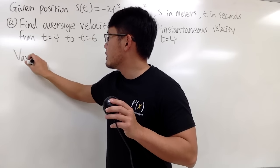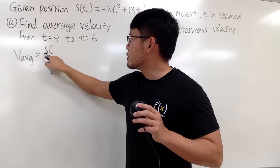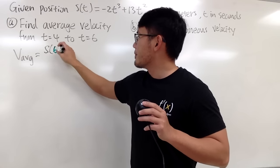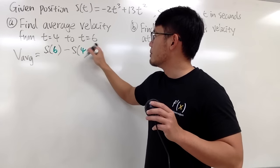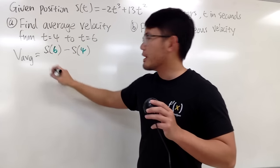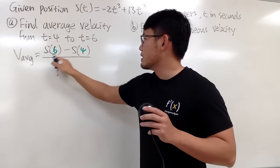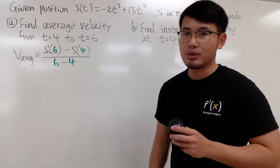Remember, what you do is you look at the final position, so this is my S. S at 6, the final position, and then minus S of 4, because that will be the initial position, and then divided by how long it takes. So it'll be 6 minus 4, which is 2 seconds. But this is pretty much all you have to do.